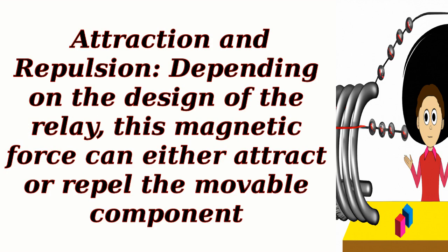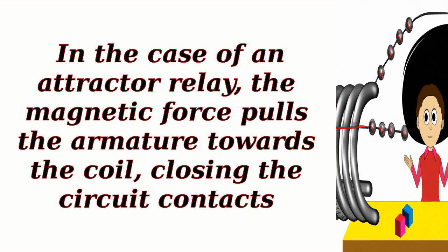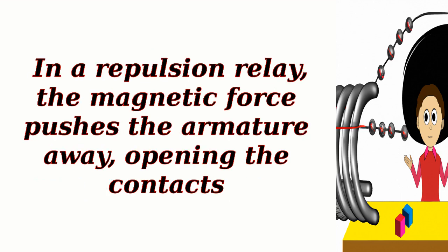Attraction and repulsion: Depending on the design of the relay, this magnetic force can either attract or repel the movable component. In the case of an attractor relay, the magnetic force pulls the armature towards the coil, closing the circuit contacts. In a repulsion relay, the magnetic force pushes the armature away, opening the contacts.